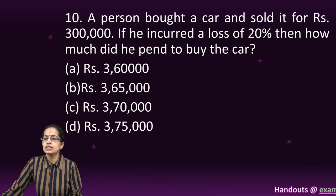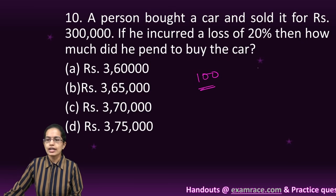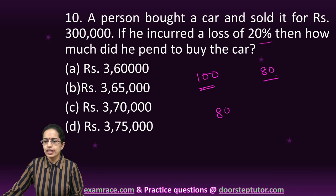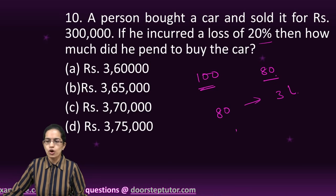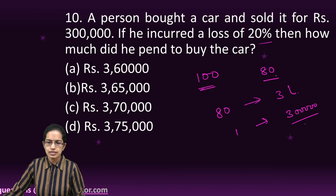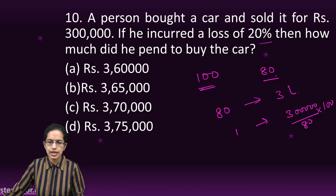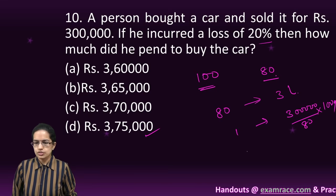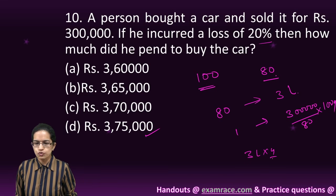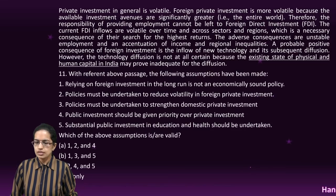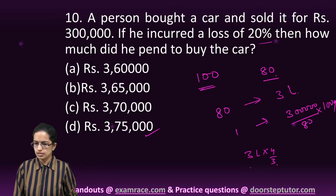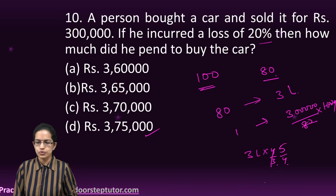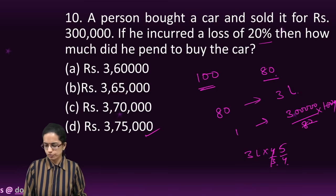The next question: if I buy a car for 100 and incur a loss of 20%, it becomes 80. For 80, the price is 3 lakhs. So for 100, it would be 3 lakhs divided by 80 multiplied by 100. Simply solve this: 3 lakhs multiplied by 5 by 4.